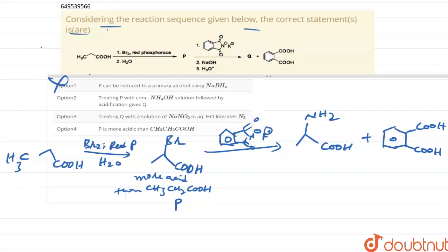So option one is wrong. Now coming to second option: treating with concentrated NH4OH solution followed by acidification gives Q. So if P reacts with NH4OH, will it form Q or not? Yes, actually if we do ammonium hydrolysis it will form NH2, which is the same compound as Q. So second one is the correct statement.